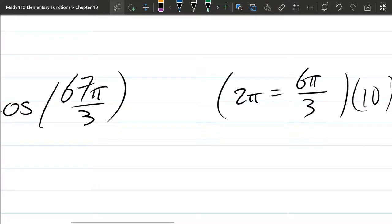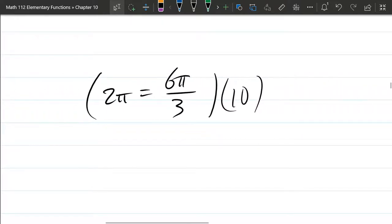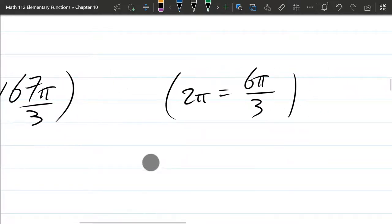So first of all, we're going to need to know how many rotations are in there. 2π is 6π over 3. So that's how to think about rotations in terms of thirds. Now there's a whole lot of those in 67π over 3.